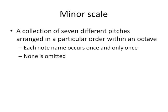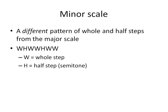A minor scale is a collection of seven different pitches arranged in a particular order within an octave. Each note name occurs once and only once, and no notes are omitted. The minor scale comprises a different pattern of whole steps and half steps from the major scale. It is important to note that the half step is always a diatonic half step, never a chromatic half step, because that would violate the once and only once rule.